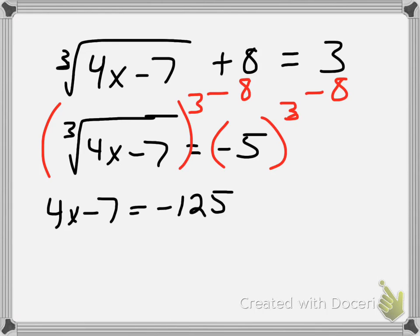Now I will continue to solve for my x by isolating it like a standard equation, which means I will add 7 here. In this case, it gives me negative 118.